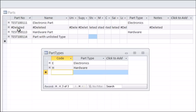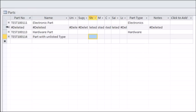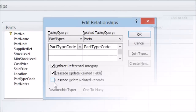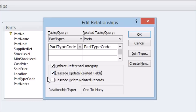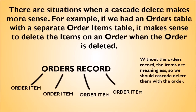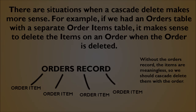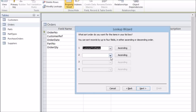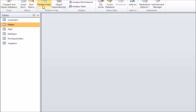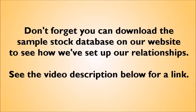The third box is 'Cascade Delete Related Records'. Ticking this means that if you delete a record — for example 'S' for software — from the primary table, then any parts with that part type will be deleted too. Normally you would not want this to happen, so leave it unticked. However, there will be examples where you do want to tick cascade delete — it normally applies when one table forms supplementary information for another, such as orders and order items. Now you've seen how to set up a relationship, go through setting up all the relationships you had planned in your design.